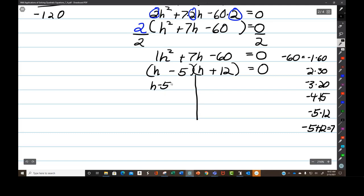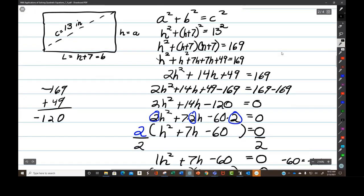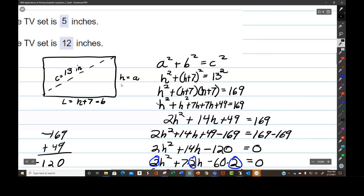H minus 5 equals 0, H plus 12 equals 0. Add 5 to both sides, I get H equals 5. Subtract 12 from each side, I get H, which is the height, equals negative 12 inches. What would that even mean? That doesn't make sense given the context of the problem. We're talking about a television and the diagonal of a television. So we're going to say that H equals 5, and the length is 5 plus 7, which is 12.